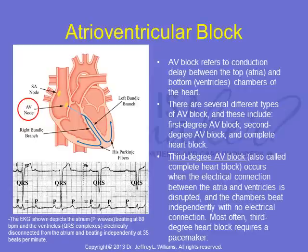Atrioventricular block refers to conduction delay between the top, the atria, and the bottom, the ventricles, chambers of the heart. There are several different types of AV block, including first degree AV block, second degree AV block, and complete heart block. Third degree AV block, also called complete heart block, occurs when the electrical connection between the atria and ventricles is disrupted, and the chambers beat independently with no electrical connection. Most often, third degree heart block requires a pacemaker.